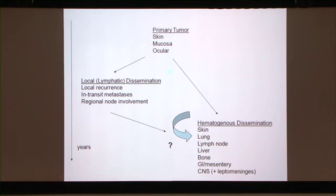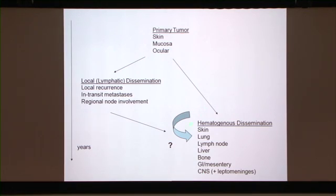Melanoma can spread simultaneously through the lymphatics — which means the regional lymph nodes — but also through the bloodstream to other areas of the body. This is what makes the disease dangerous. When it spreads to other areas of the body — the skin, the lungs, the brain, the liver, and other places — it becomes a much harder disease to treat and can become deadly. This is what we focus on a great deal here.